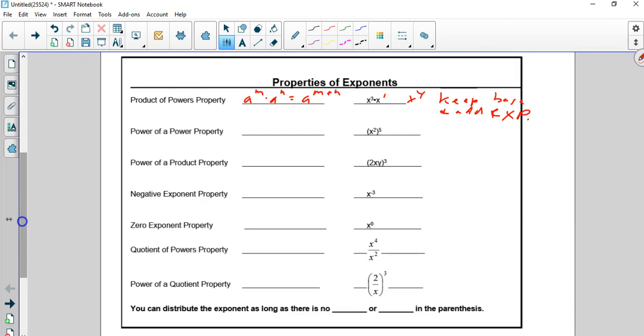Power of a product. That's when you take a to the m and raise it to another power. Well, in that case, we multiply the exponents. So this would be equal to x to the 10, 5 times 2.